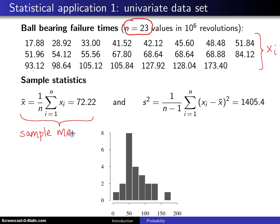Now, in probability, we will also be calculating something known as the population mean, and we'll use the symbol mu, the Greek letter mu, for the population mean. The sample mean is generally given by x bar, and it's just the arithmetic average, and in this case the average of these 23 numbers that you see up above here is 72.22 million revolutions.